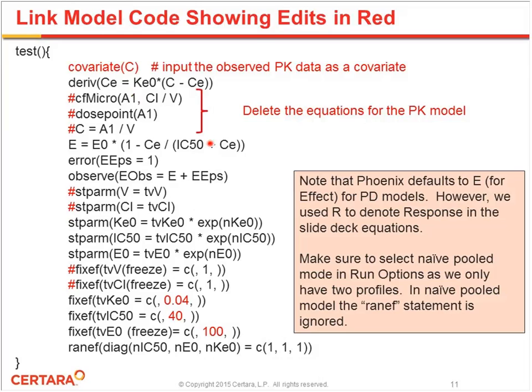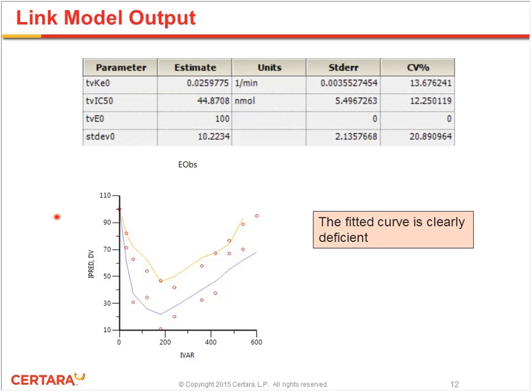If you fit this model to the data, the estimated parameters come out well. KEO was guessed at about 0.04 and the point estimate was about 0.026 — pretty good. The IC50 we had guessed around 40 and the estimate was about 44.8, with very good precision. However, if you look at the plot of observed versus predicted data, the predicted curve is not fitting the observed data as well as we would like, particularly for the higher dose. It mimics the trends in the data but is a bit deficient.